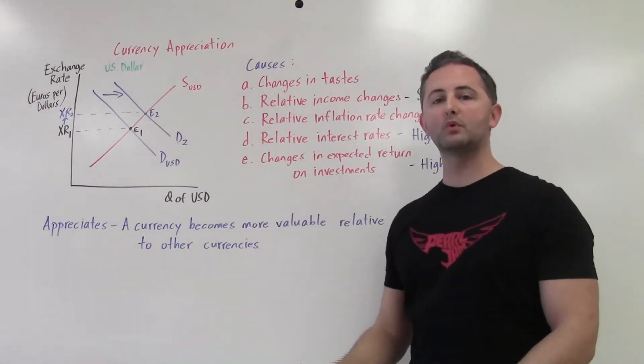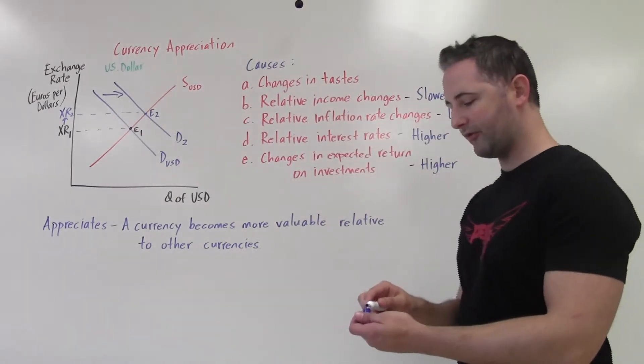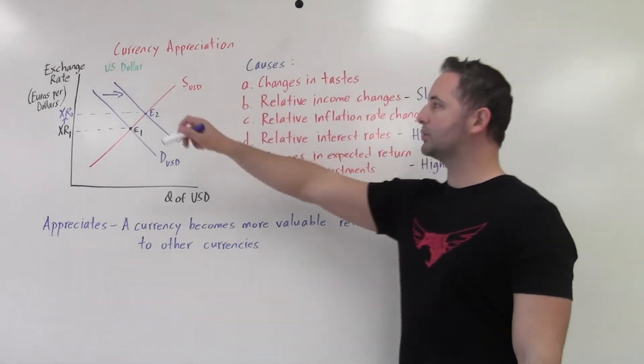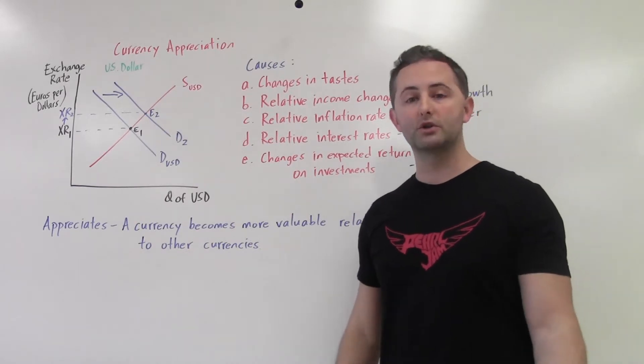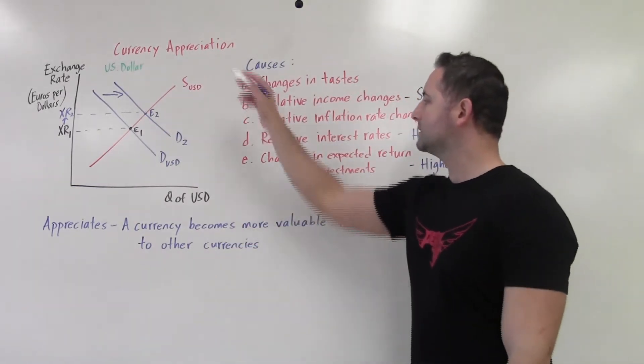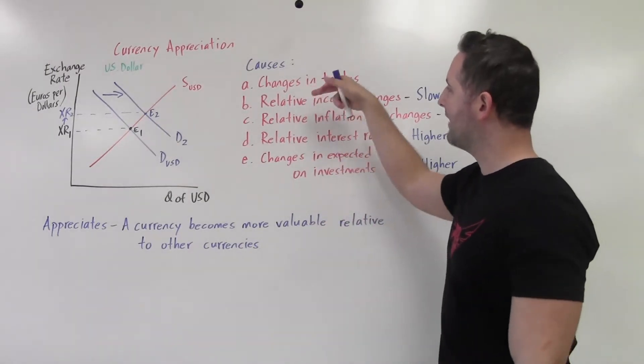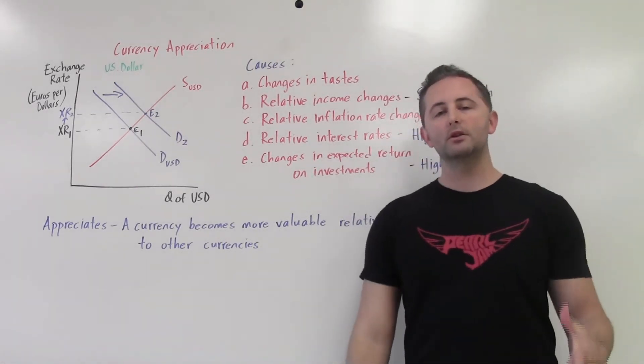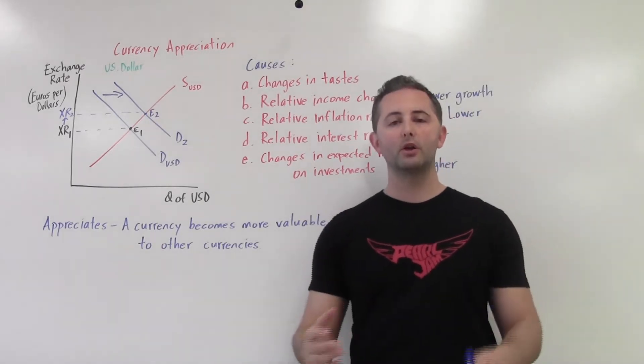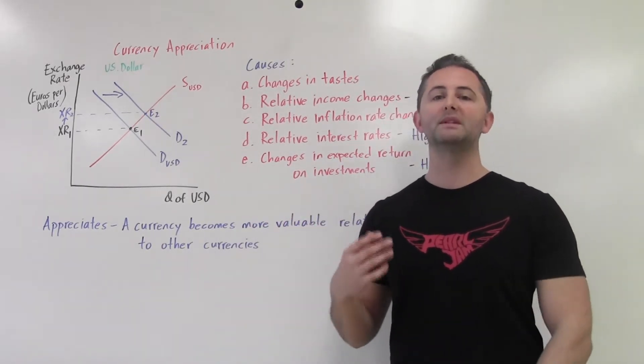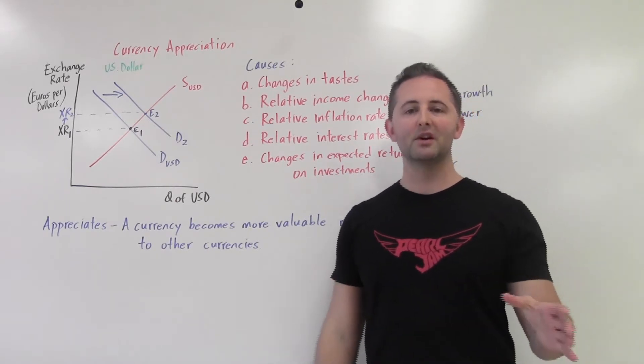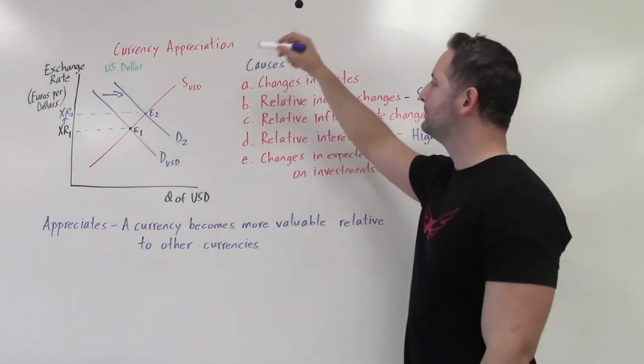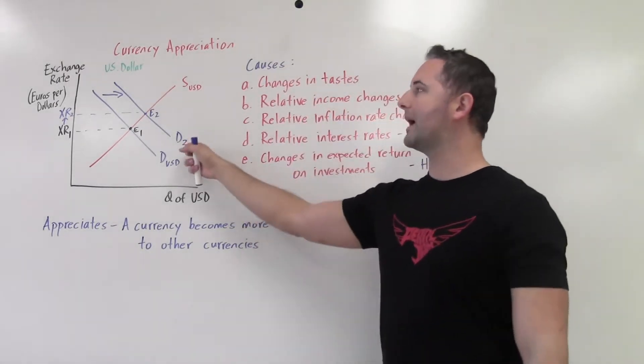So then the question obviously becomes, well, what would cause this demand curve for the U.S. dollar to shift right? Why are people demanding more U.S. dollars? So we're comparing, again, since we're doing the euro, we're comparing a lot of European countries to the United States. So we have five things here, and you'll notice that three of them have the word relative. Relative income, relative inflation, relative interest rates. And the idea here is pretty simple. Again, it is any comparison to the other country. In this case, with the euro, multiple countries. I'm just going to probably say the word country just because it's easier. So yes, I know, Europe, not a country. But just for the sake of simplicity.